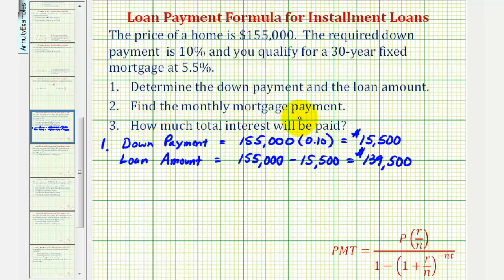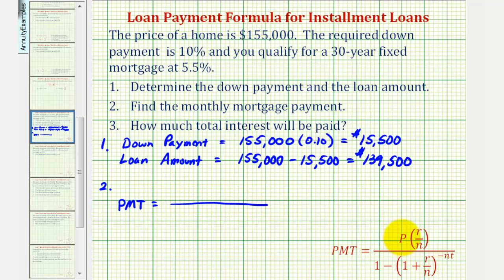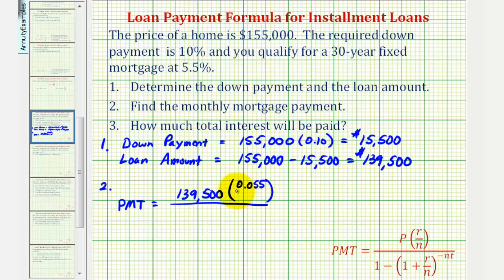For number two, we want to find the monthly mortgage payment. To do this by hand, we'll be using a formula. I'll also show how to use the TI-84 graphing calculator to determine the monthly payment. Using the formula, the monthly payment equals a quotient where P is the loan amount of $139,500, times R divided by N, where R is the annual interest rate of 5.5 percent (expressed as 0.055), and N is 12 — the number of monthly payments per year.